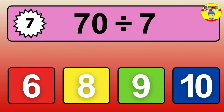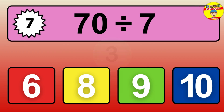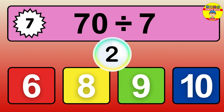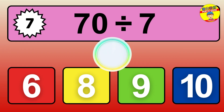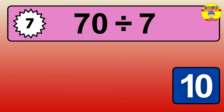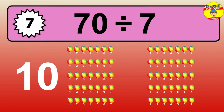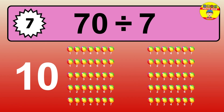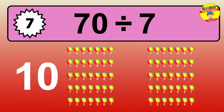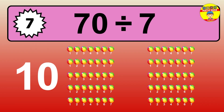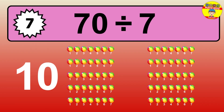45 divided by 9 — time to think. Let's go to the solution. Divide the number 45 by 9. Each group contains 9 units, so dividing 45 by 9 results in 5 equal groups. Thus, the result is 45 divided by 9 equals 5.